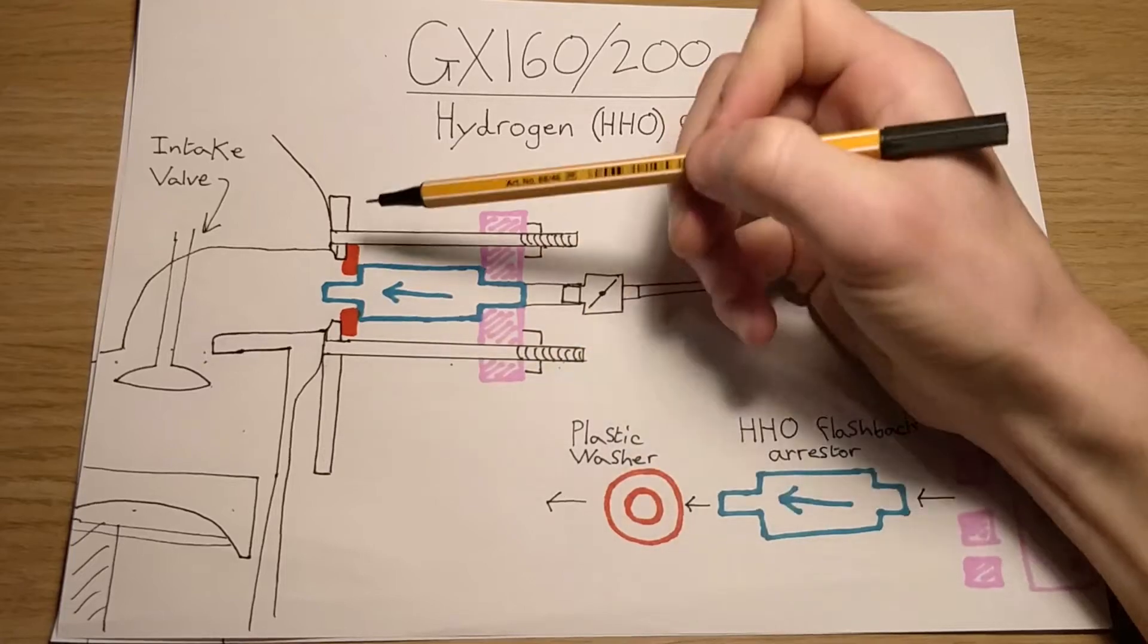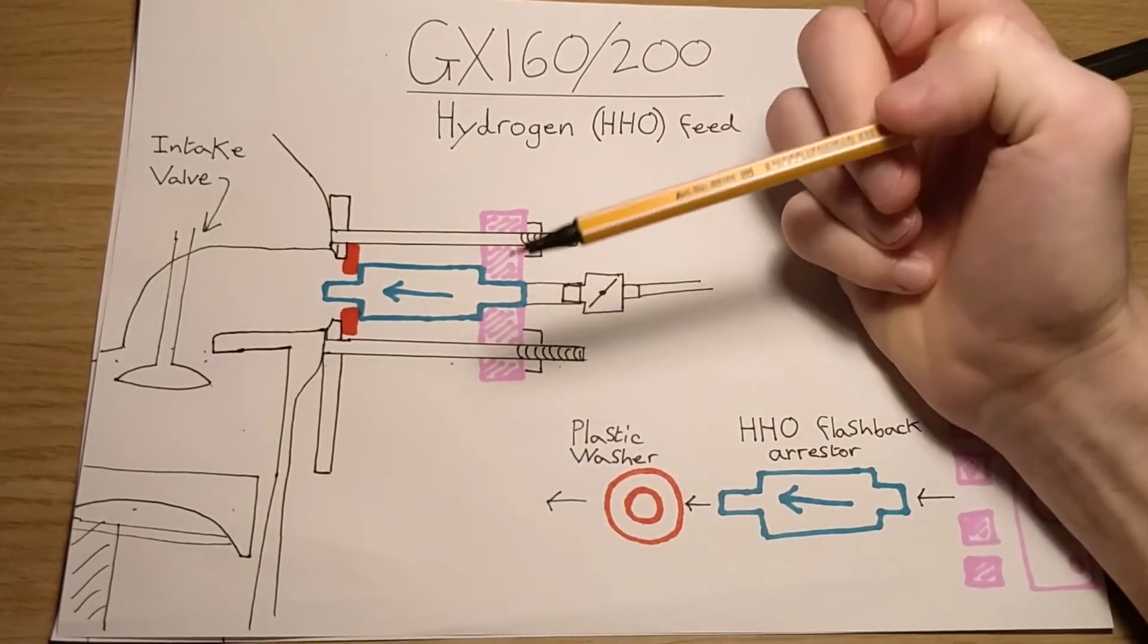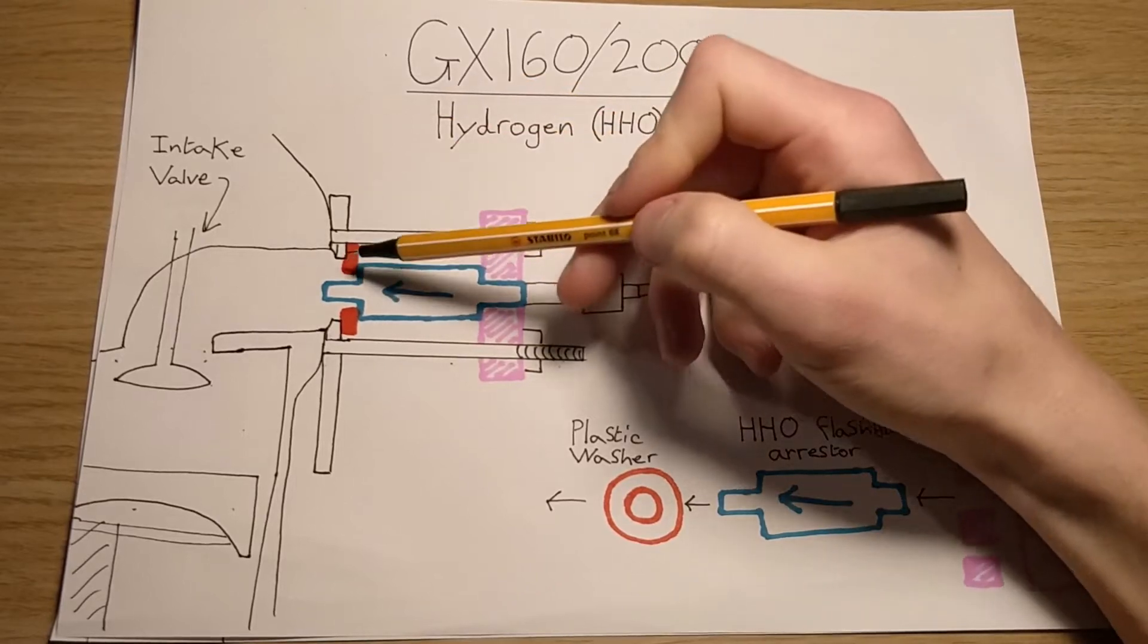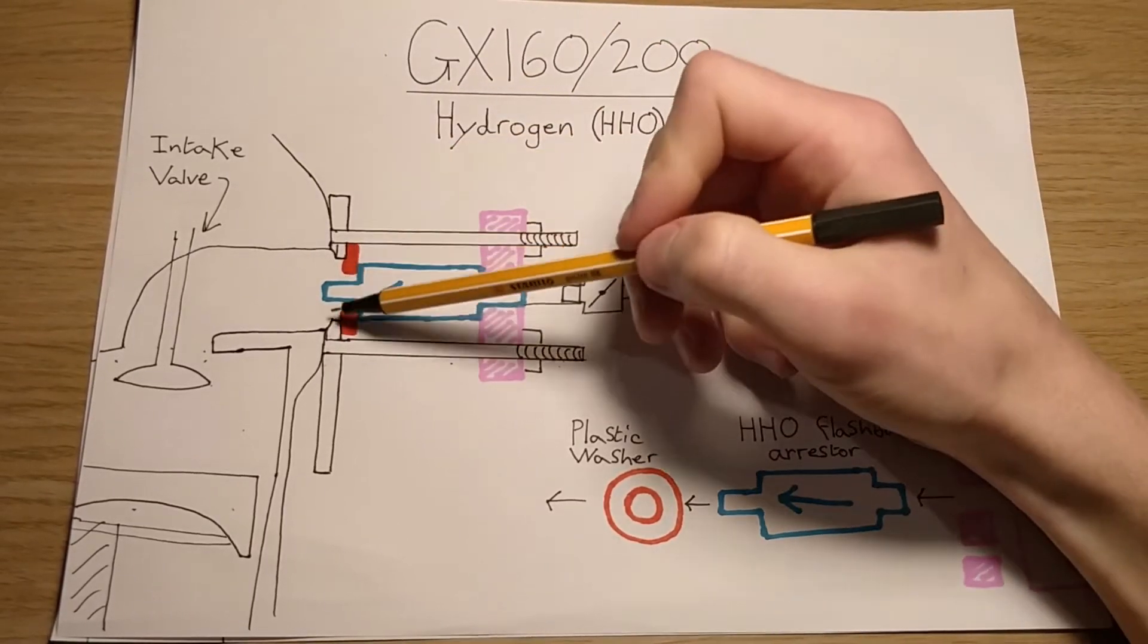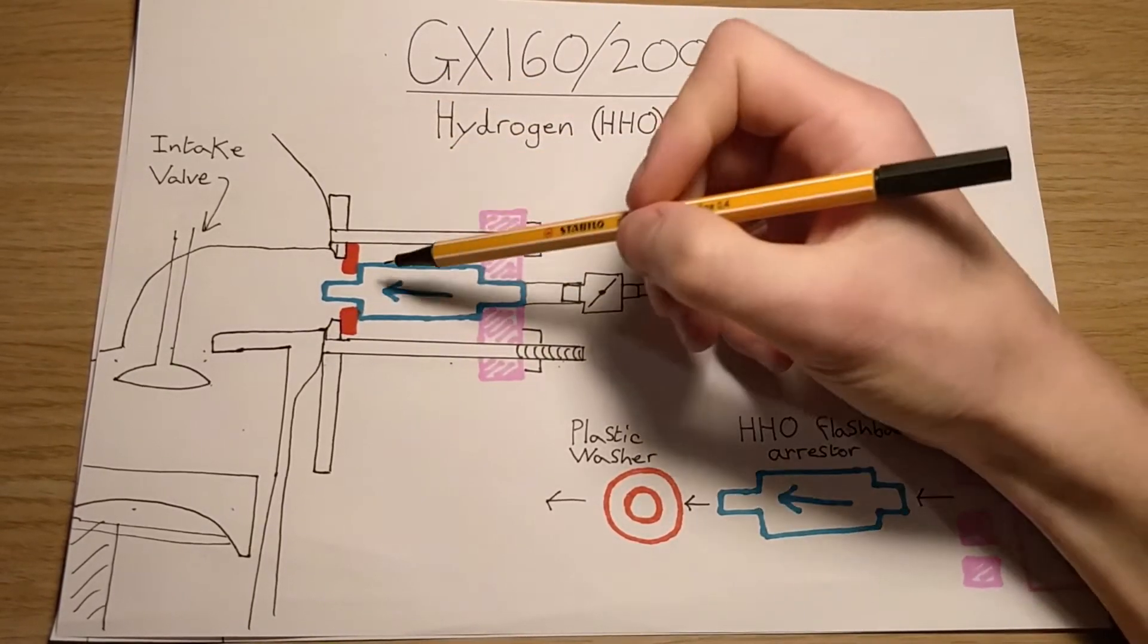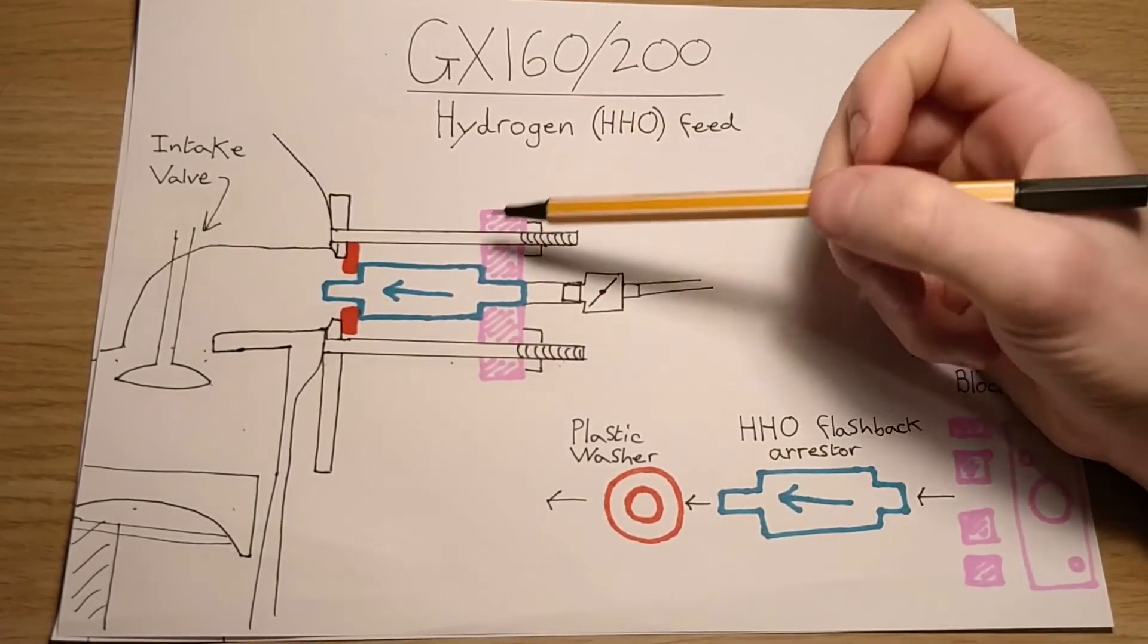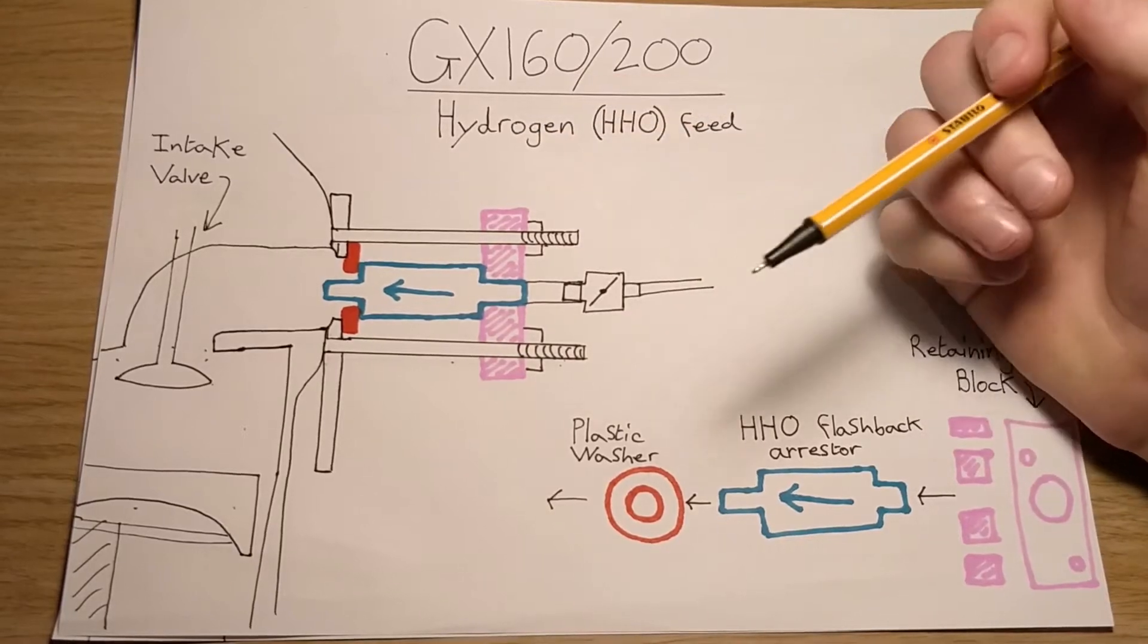So you keep that on. These are the studs that come out the engine which usually hold the carburetor on. So we're going to use them to our advantage, and I used a plastic washer, a HHO flashback arrester, and some sort of plate to hold it all together.